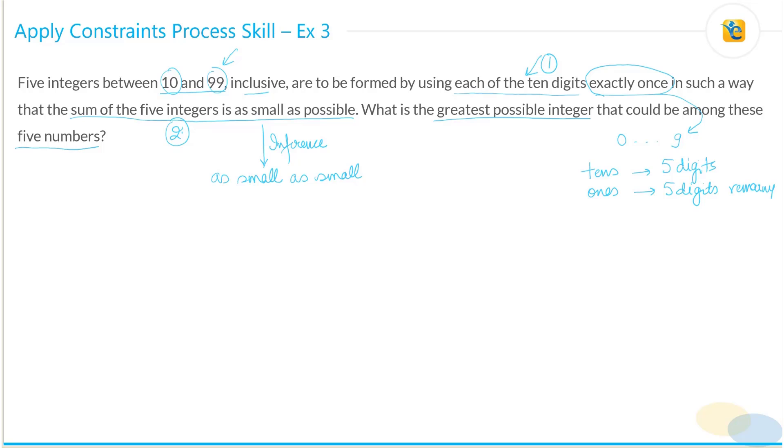Now let's bring this over here. If your numbers have to be as small as possible, then your tens digits—let's draw this inference from both of these—then your tens digits should be composed of smaller digits.